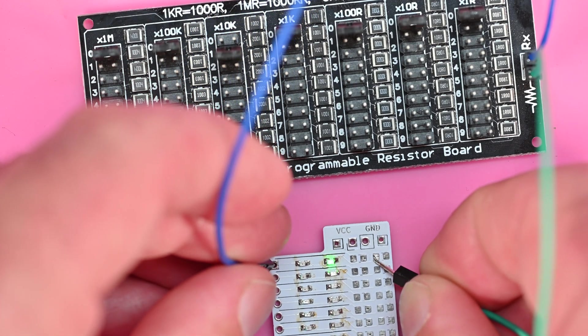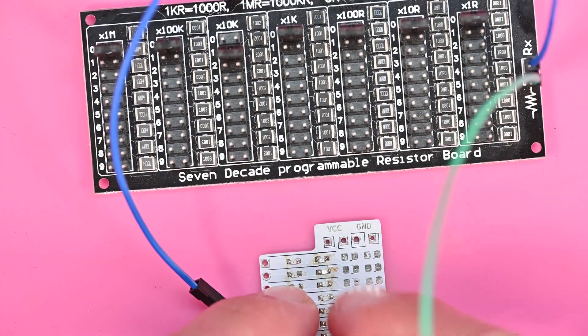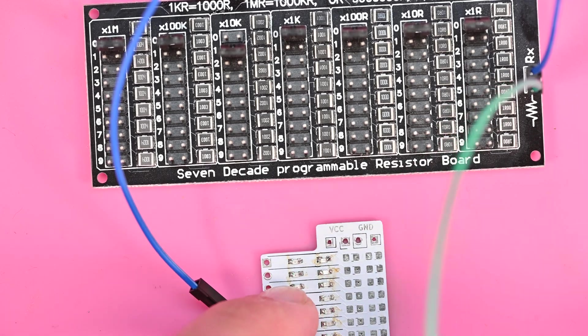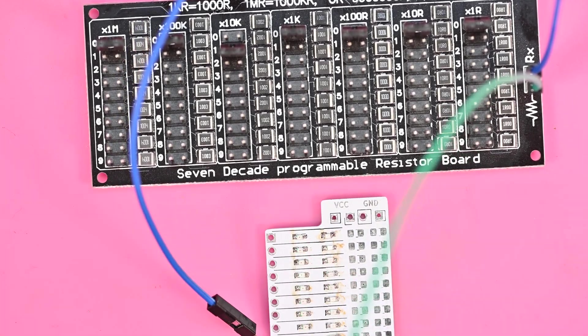There we go. No, 10k is a bit too dim, so I'm going to go 5k for the outside here and 1k for the inside here. And those are just soldered the exact same way as the resistors, so you guys don't really need to see that.